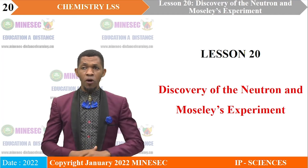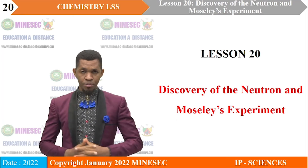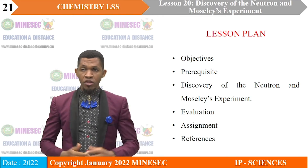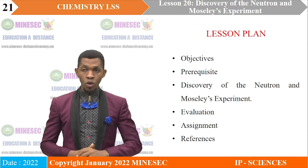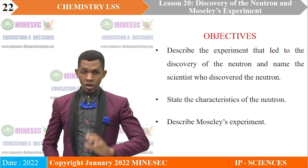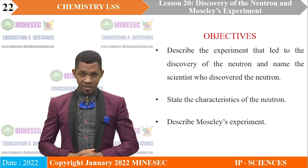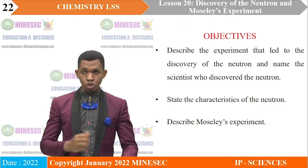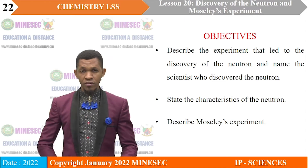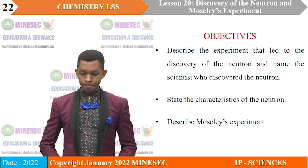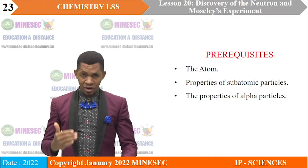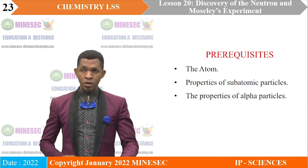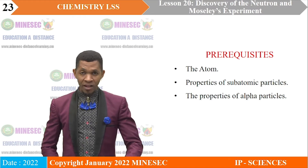Today's lesson is titled Discovery of the Neutron and Moseley's Experiment. By the end of this lesson you should be able to describe the experiment that led to the discovery of the neutron and name the scientists who discovered it, state the characteristics of the neutron, and describe Moseley's experiment. Prerequisites include mastery of the atom, properties of subatomic particles, and the properties of alpha particles.